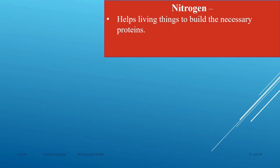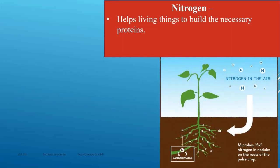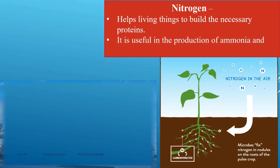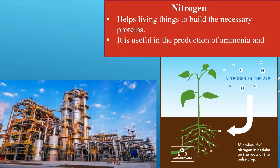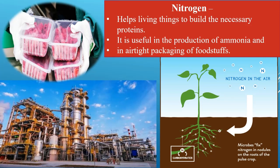We will be learning about the uses of gases in the air. First, nitrogen: it helps in building the necessary proteins in our body. Here you can see a plant absorbing nitrogen from the atmosphere through the roots — plants process and absorb nitrogen to produce proteins, which are then taken up by animals or humans. Nitrogen is also useful in the production of ammonia, which is useful for plants. It is also used in airtight packaging of foodstuffs, as you can see here.